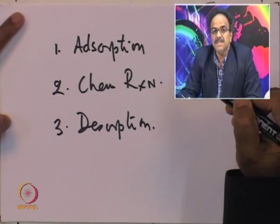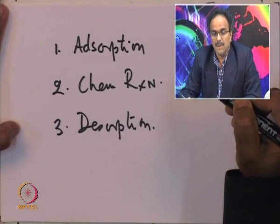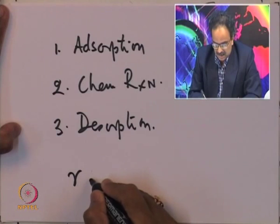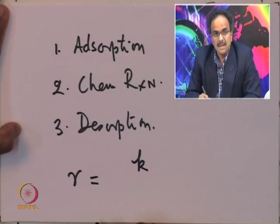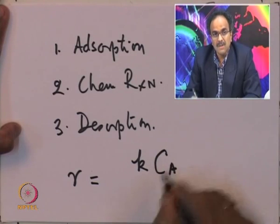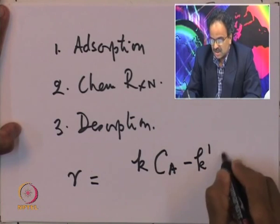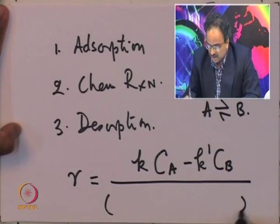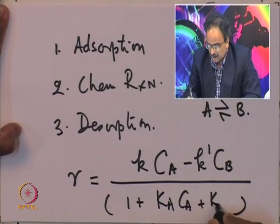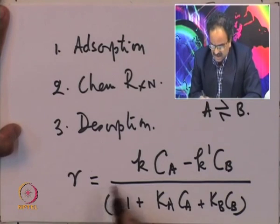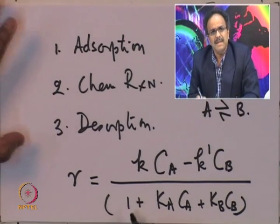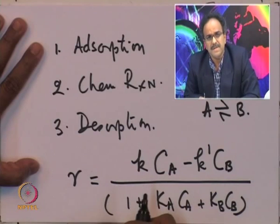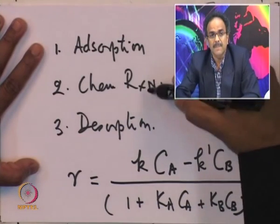The adsorption step can be controlling, the reaction can control the overall rate, or it can be the desorption that controls overall rate. The rate equation we get is of the form R equals some rate constant times bulk concentrations — for example, K_dash times C_B for a reaction A in equilibrium with B — and in the denominator we get an additional expression. This form changes depending on which step controls the overall rate.